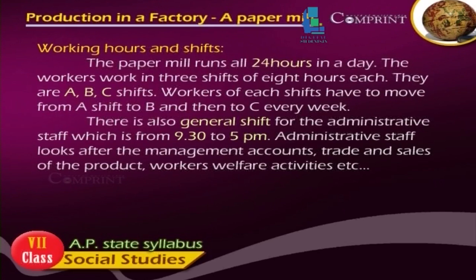Working hours and shifts: The paper mill runs all 24 hours in a day. The workers work in 3 shifts of 8 hours each — A, B, and C shifts. Workers of each shift have to move from A shift to B and then to C every week. There is also a general shift for the administrative staff, which is from 9:30 to 5 pm.